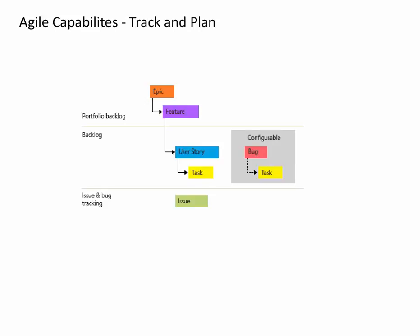With the track and plan feature, you track work for a project through work items. For example, if you find a bug in someone's code, you can open a defect work item and assign it to the person who owns the code. Teams can create stories, tasks, and defects to describe and track work project items, and provide agile planning tools to help manage the product backlog, releases, and sprints.